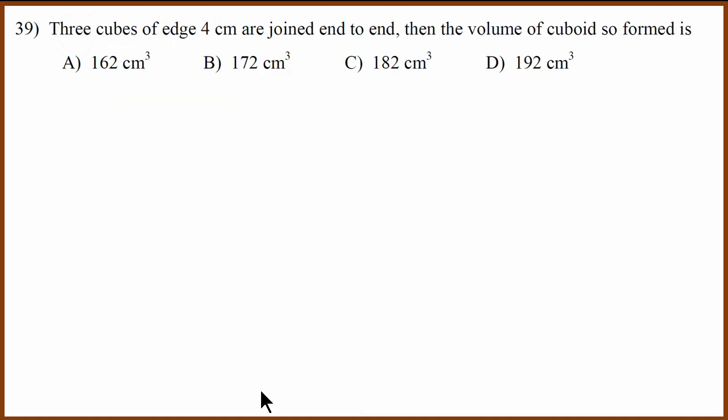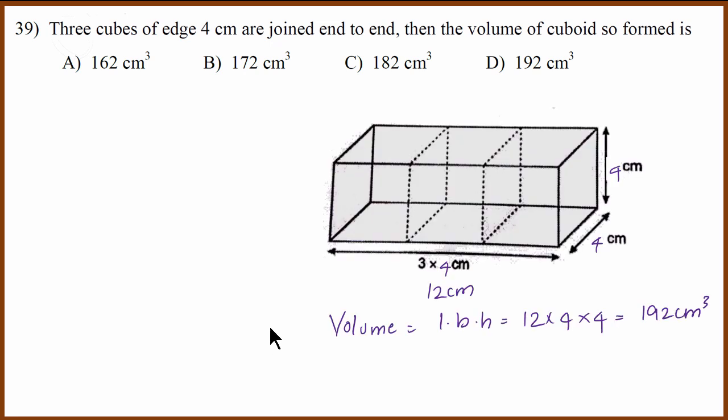39th question. Three cubes are joined end to end which basically looks like this. When you join three cubes, you get a cuboid where the length will be 12 centimeter, breadth is 4 centimeter and height is 4 centimeter. If you multiply that you get 192 centimeter square. 12 times 16 is 192.